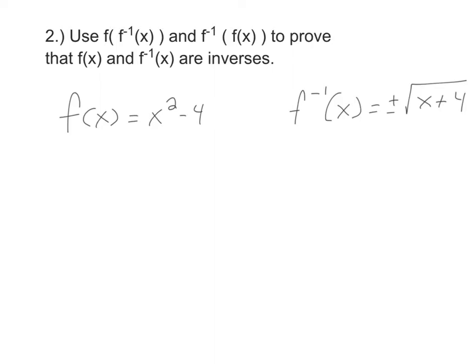Second thing that you have to be able to do is to prove that f of x and f inverse of x are, in fact, inverses. And when we do that is we do the function composition. So we have to do f of f inverse of x and f inverse of f of x. And we actually do it in both directions, and we should end up with the same thing both times. And we should both end up with x both times.